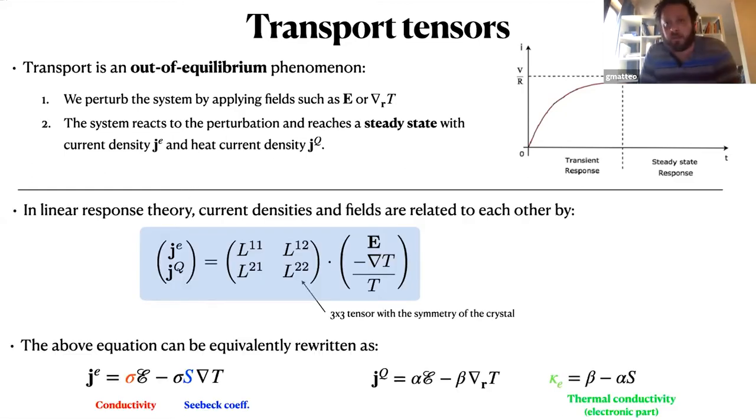We are also interested in the linear regime, so we want to understand how the electric current density and the heat current density are related to the fields. Obviously we are in the linear regime so everything can be expressed in terms of this linear operator in which each block is a three by three tensor with the symmetry of the point group of the crystal. These quantities can depend on the magnetic field, temperature, but they do not depend on the perturbation.